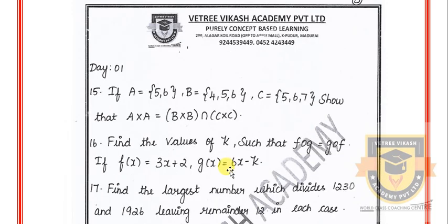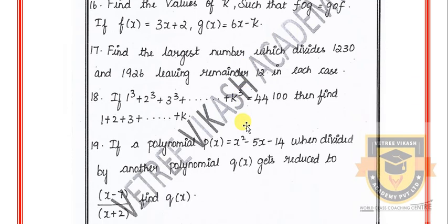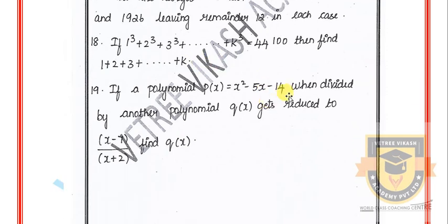The 15th question: If A equals {5, 6}, B equals {4, 5, 6}, C equals {5, 6, 7}, show that A cross A equals B cross A intersection C cross C. Find the values of k such that f of g equals g of f, where f of x equals 3x plus 2 and g of x equals 6x minus k. Find the largest number which divides 1230 and 1926, leaving remainder 12 in each case. If 1³ plus 2³ plus 3³ up to k cubed equals 44100, find 1 plus 2 plus 3 plus … up to k. If polynomial p of x equals x squared minus 5x minus 14, when divided by another polynomial q of x, gets reduced to (x minus 7) over (x plus 2) — find q of x.